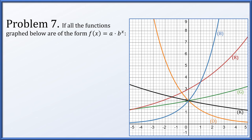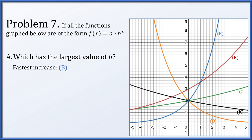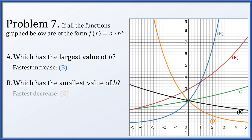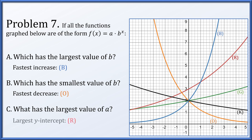In problem 7, all functions are of the form a times b to the x. For which is b the largest? That will be the one increasing fastest — the blue curve. For which is b the smallest? We're looking for the fastest decreasing curve — that's the orange curve. For which is a the largest? A gives us the intercept, and the largest intercept belongs to the red curve.